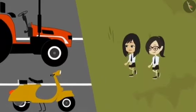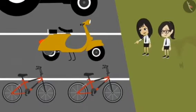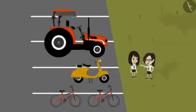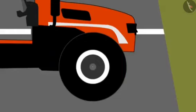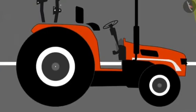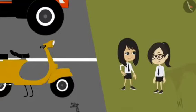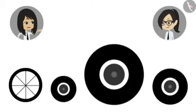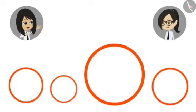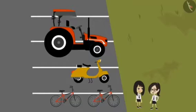And look at the tyres of the scooter — they are smaller than that of our bicycle. Yes, but the tractor also has two types of tyres and the front tyre is smaller than the tyre at the rear. You noticed one thing? We saw four different sizes of tyres but all are in the shape of a circle. Yes, you are right Neha, all are circular.